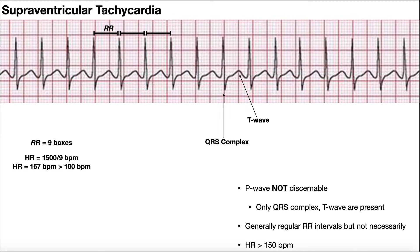One characteristic feature of supraventricular tachycardia is normally the P wave is not discernible. What you're actually going to see are a QRS complex and a T wave. Let's take a look at that.